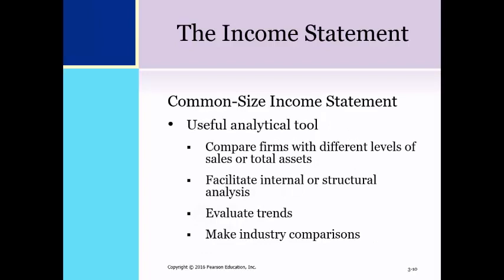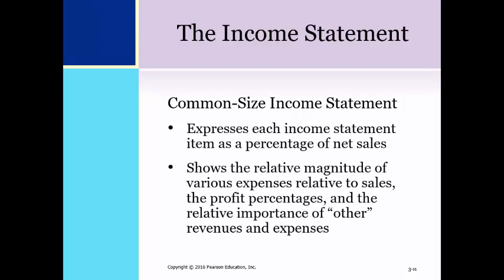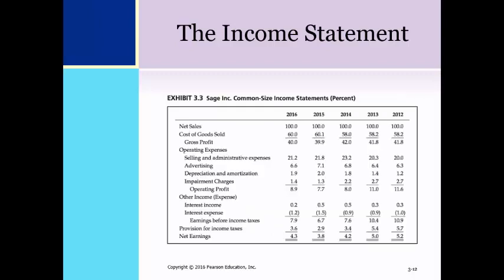Common size financial statements are a useful analytical tool to compare firms with different levels of sales or total assets, facilitate internal or structural analysis of a firm, evaluate trends, and make industry comparisons. The common size income statement expresses each income statement item as a percentage of net sales. It shows the relative magnitude of various expenses relative to sales, the profit percentages — gross profit, operating profit, and net profit margins — and the relative importance of other revenues and expenses. This is an illustration of common size income statements for Sage Inc. for the years 2012 through 2016.